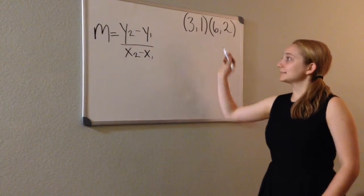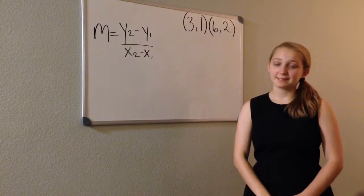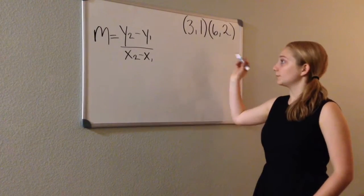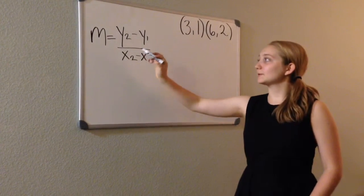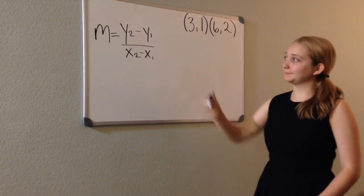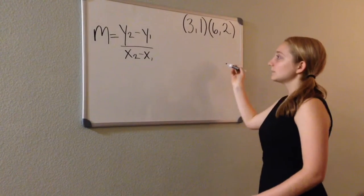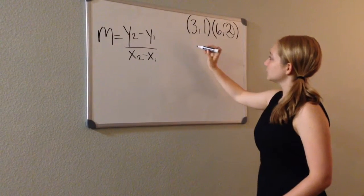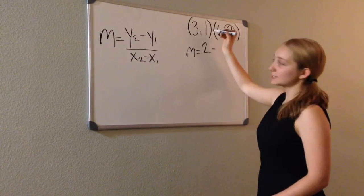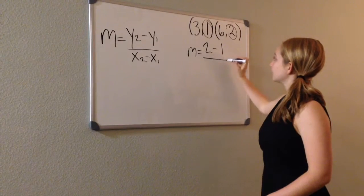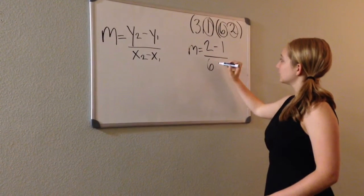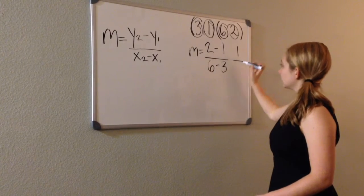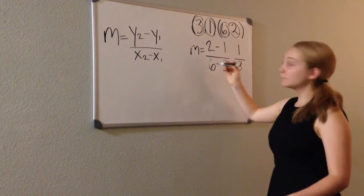Sometimes you will be given two points and asked to give the slope-intercept form. There are a few simple steps you can take to find the answer. The first thing you can do is find the slope using the slope formula: M equals Y2 minus Y1 over X2 minus X1. Simply plug in your points. Your second Y, Y2, would be 2. So M equals 2 minus 1, over 6 minus 3. 2 minus 1 is 1 over 6 minus 3, which is 3. And your slope equals 1 third.